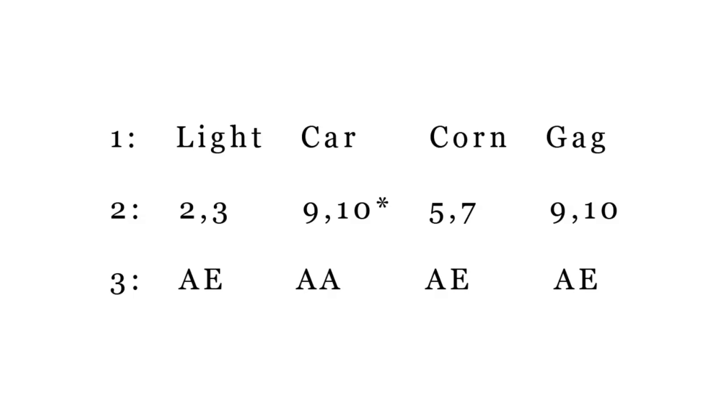So basically, I am going to explain what all of this means, because it looks pretty much like it doesn't make sense. The first line says light car corn gag. The reason why we say this is because light represents the light reflex, car represents the carotid reflex, and corn represents the corneal reflex, and gag represents the gag reflex.